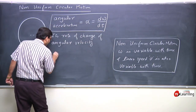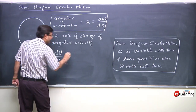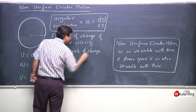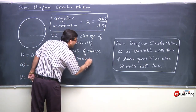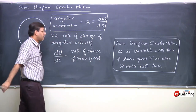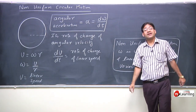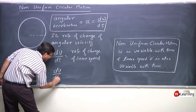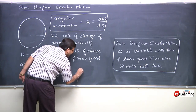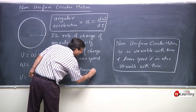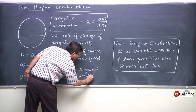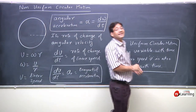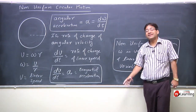We define dV/dt — the rate of change of linear speed — and denote it by At. We call it tangential acceleration.